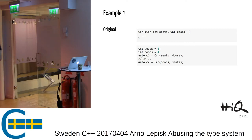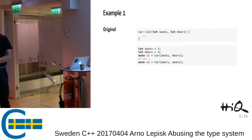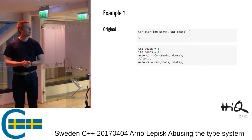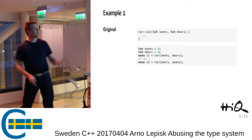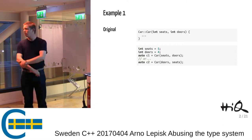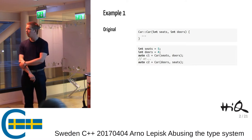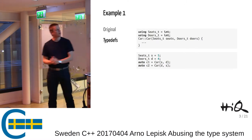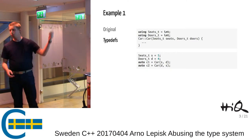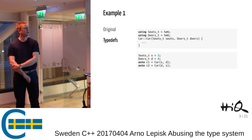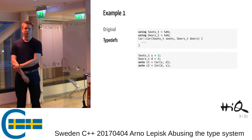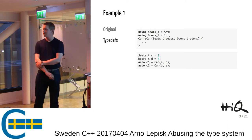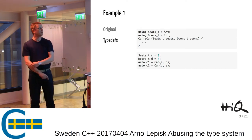One problem I've often encountered: in this example, a constructor of Car takes two integers, but it's very easy to mix them up. You don't get any warning from the compiler if you mix up the number of seats and number of doors. The first solution one comes to is using a typedef or the using construct. But that doesn't help, because they're still interchangeable.